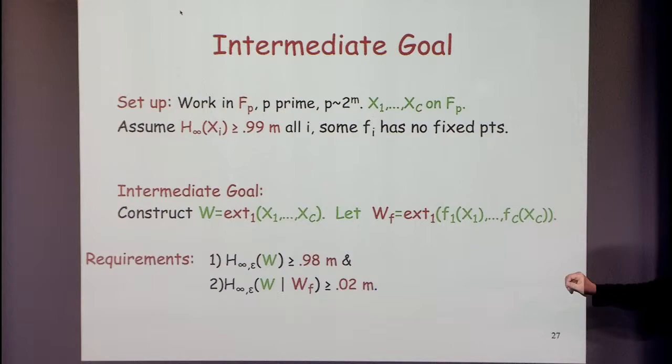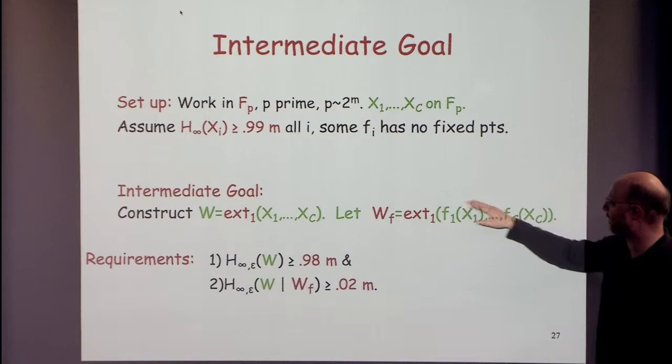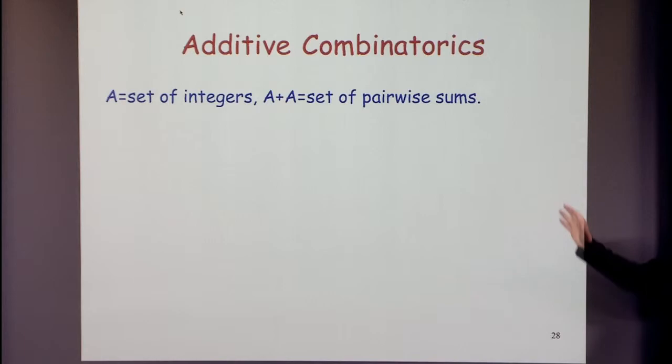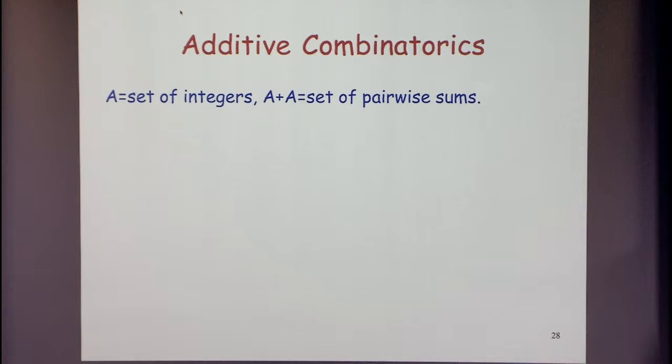What we did was come up with an intermediate goal: given the extractor output on the corrupted strings, the target value W still has some entropy. Let me introduce additive combinatorics for those who haven't seen it.